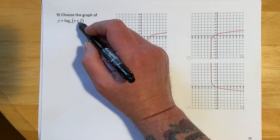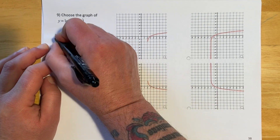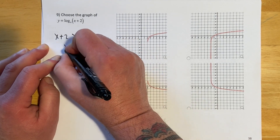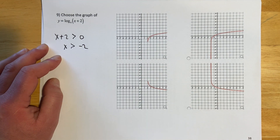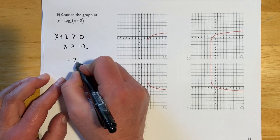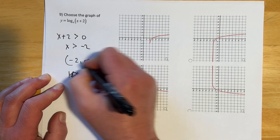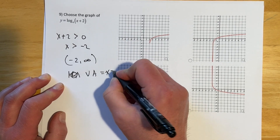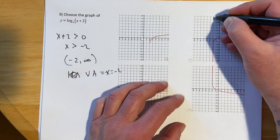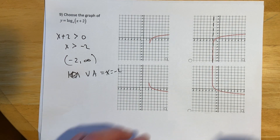This next example has (x + 2) inside the log. For the domain, x + 2 > 0, so x > -2. The domain is (-2, ∞) and there's a vertical asymptote at x = -2. Since there's no reflection, the graph must be the one with a vertical asymptote at -2 — which it is. You can also think of this as the basic log graph shifted two units to the left.